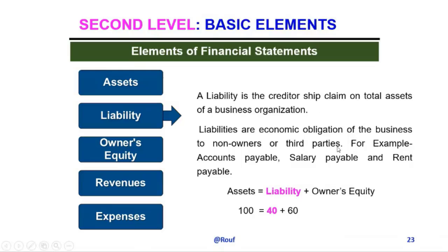Liability is the creditorship claim on the total assets of a business organization. Liabilities are the economic obligations of the business to non-owners or third parties. For example: accounts payable, salary payable, rent payable — any types of payable are called liabilities.